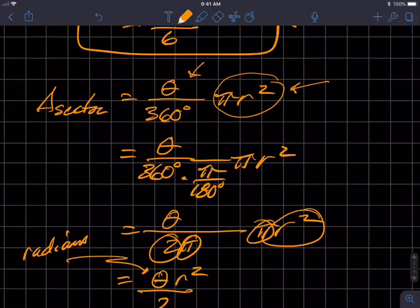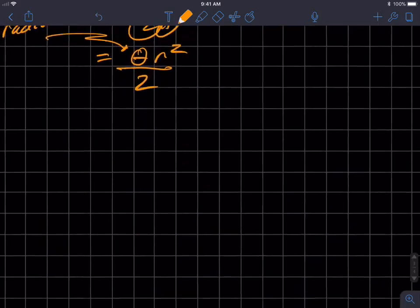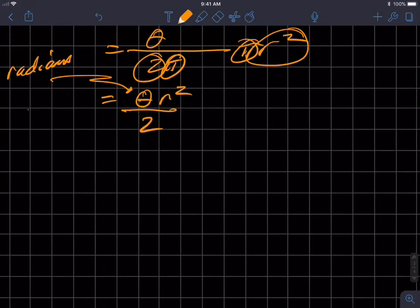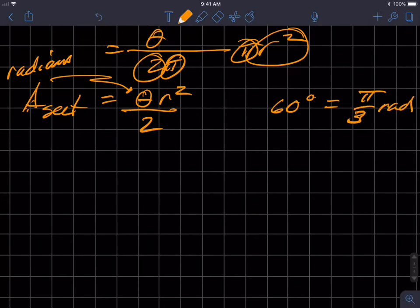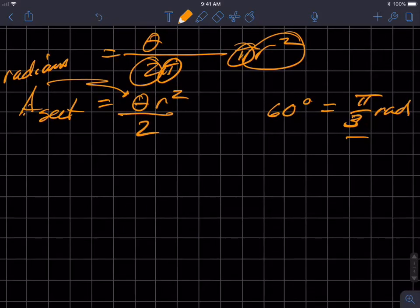If we go back to our problem that we calculated in degree measure, we're going to use seven centimeters and 60 degrees, but we're going to have to convert that. Hopefully some of you remember, area of a sector, that 60 degrees is equal to pi over three radians. If you're not sure, hit pause, do that conversion, and confirm that 60 degrees is in fact pi over three radians.